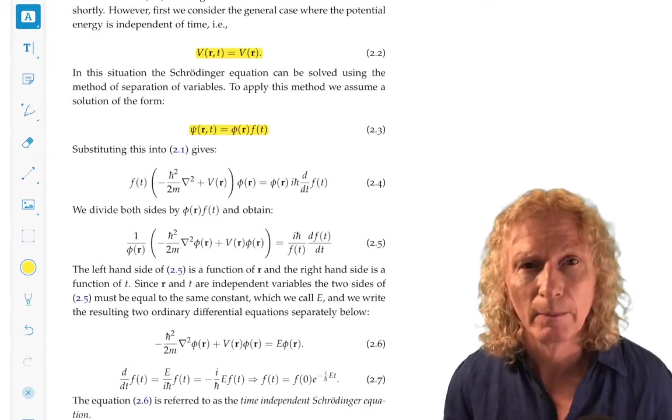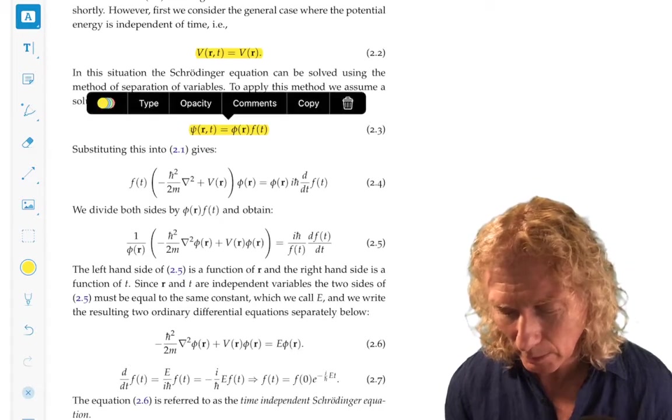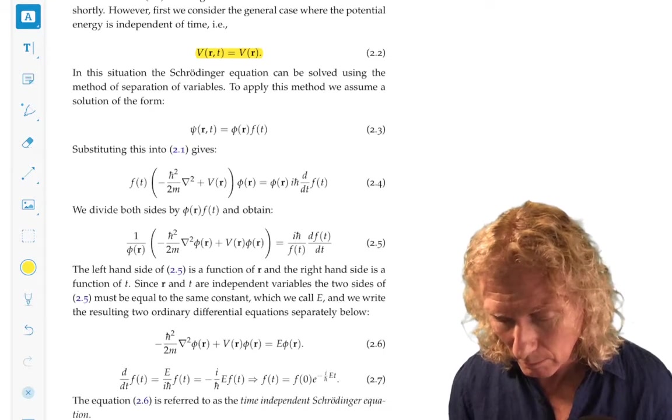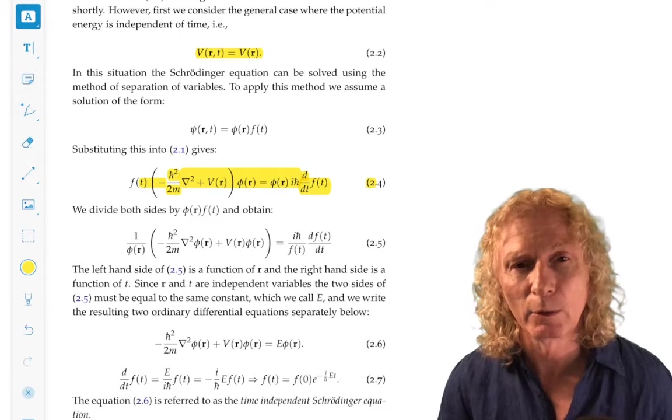So we're going to assume that the wave function, ψ of r and t, is the product of two functions, one depending only on space and the other depending only on time. We substitute that into the equation, and we get all the space dependence on the left side, all the time dependence on the right side.